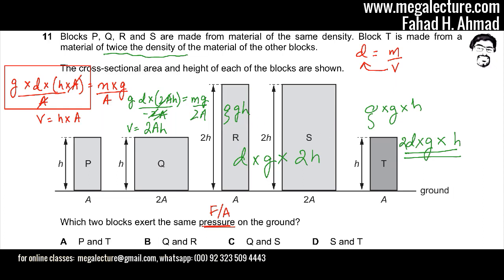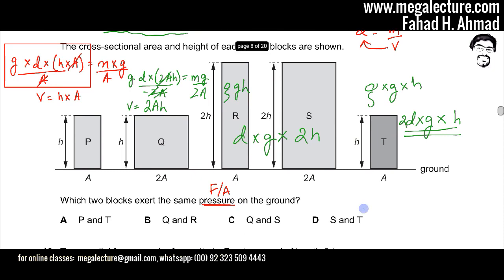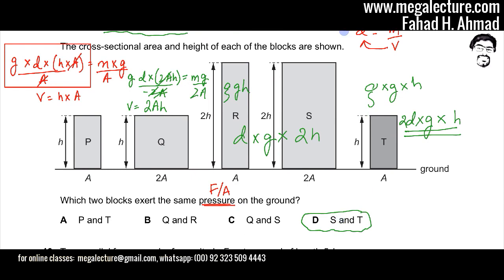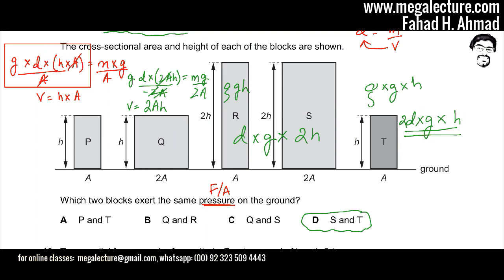Looking at the answer options, there is an option for T and S. So option D is correct. Checking the other options: Q and S have different pressure expressions, Q and R are different, and P and T are different — P gives G × D × H while T gives 2D × G × H. The correct answer is option D.